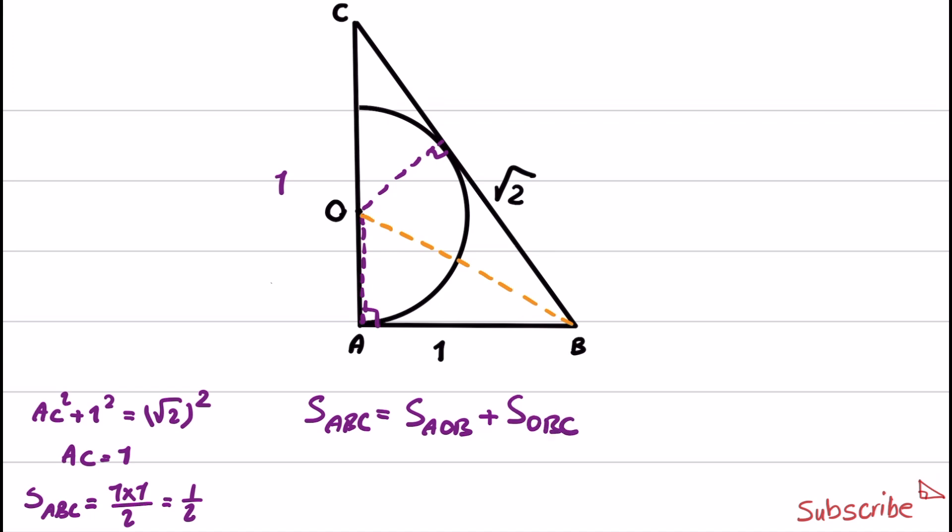And we know the area of ABC. The area of AOB is equal to altitude times base divided by 2. So this one small part is R, is 1 over 2 R times 1 plus area of OBC is equal to 1 over 2 times R times the square root of 2. And if we simplify this, we can simplify 1 over 2's.